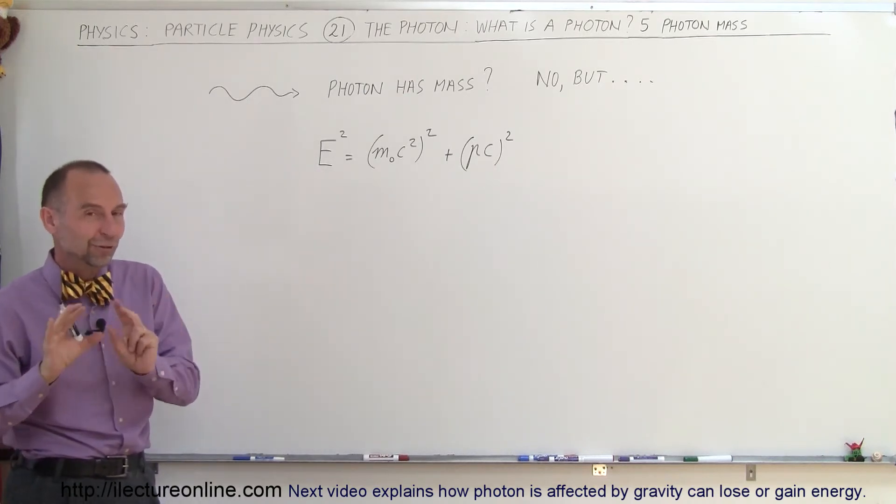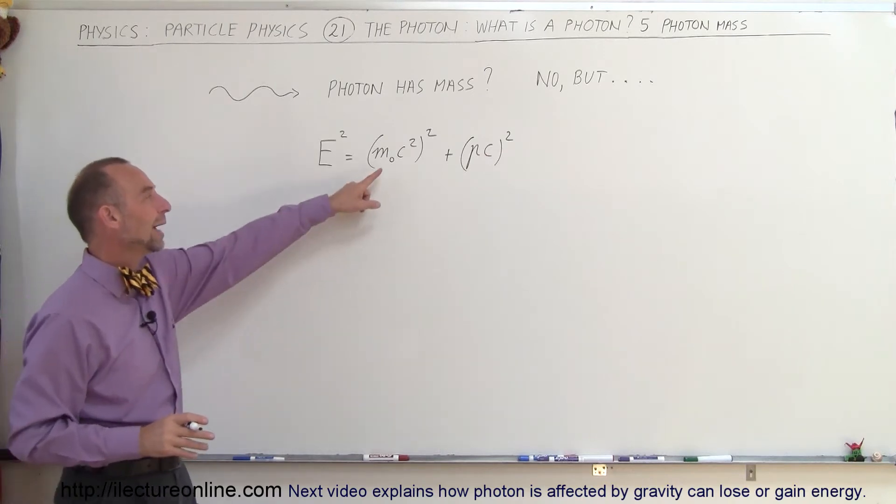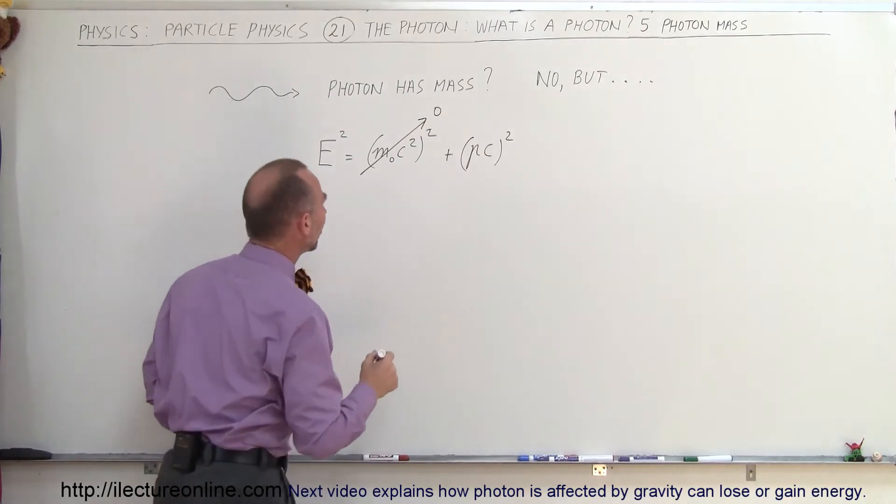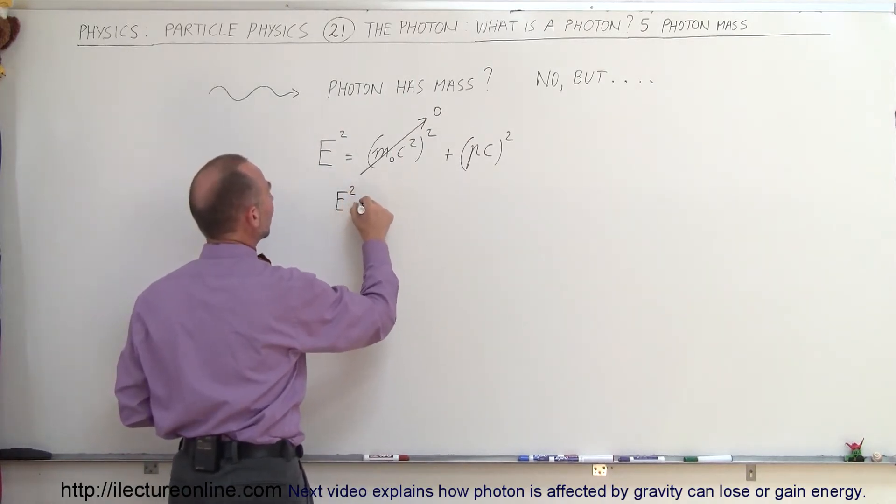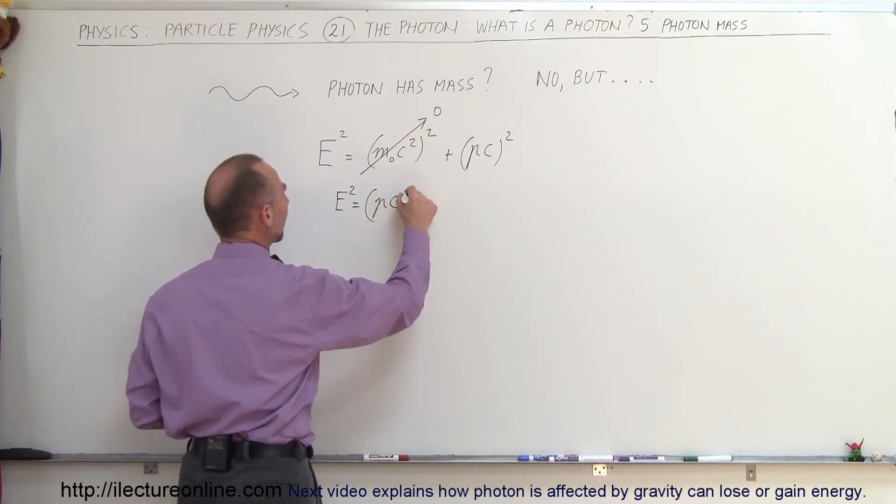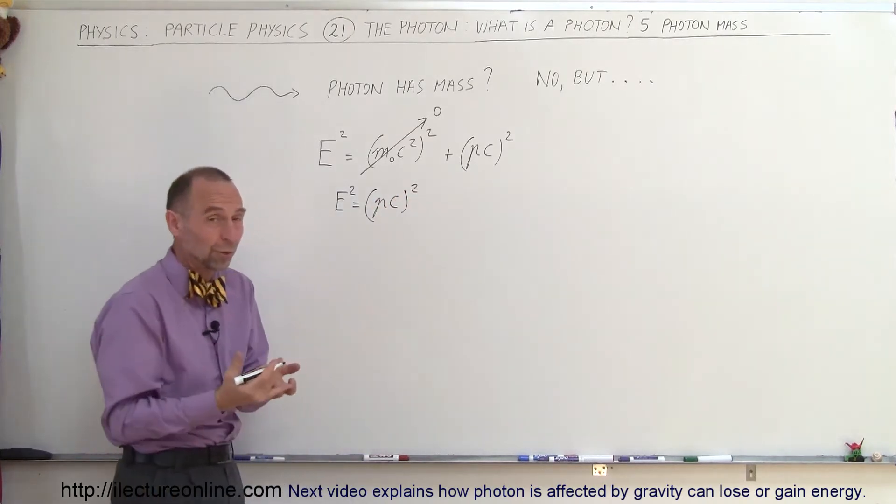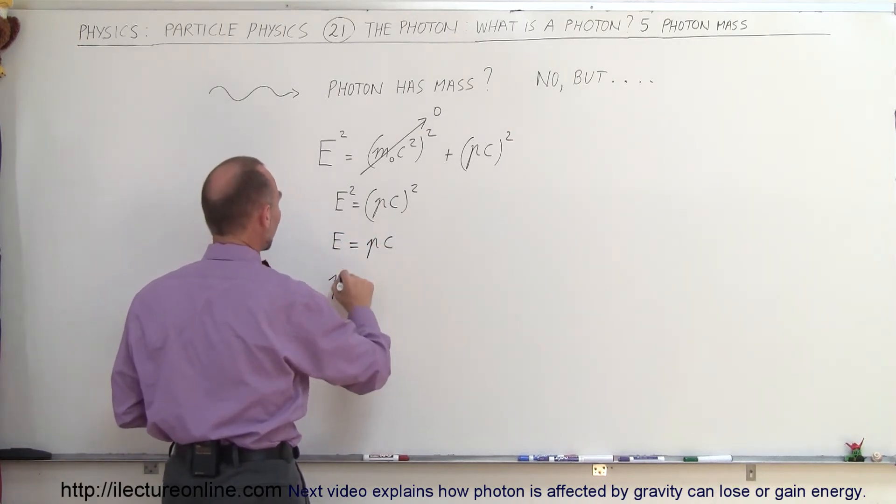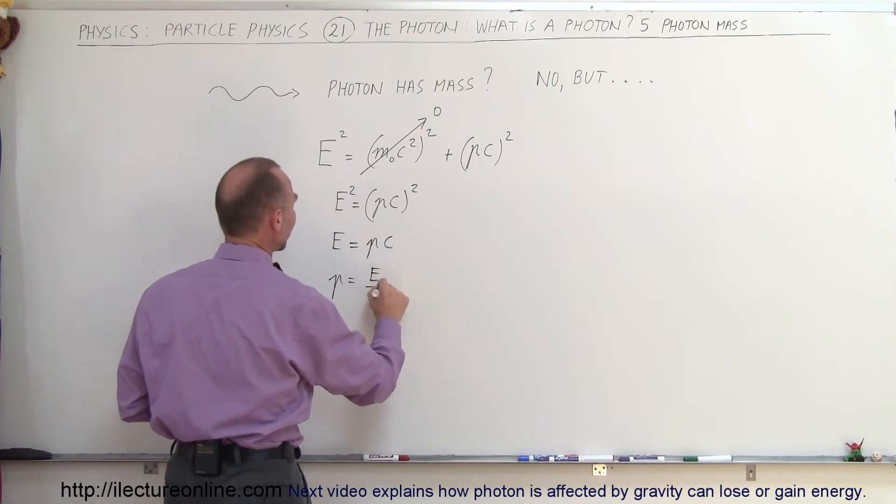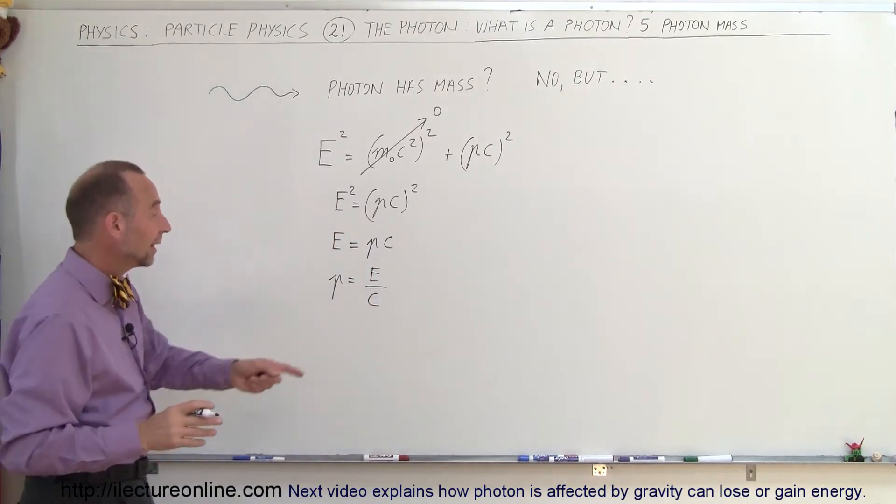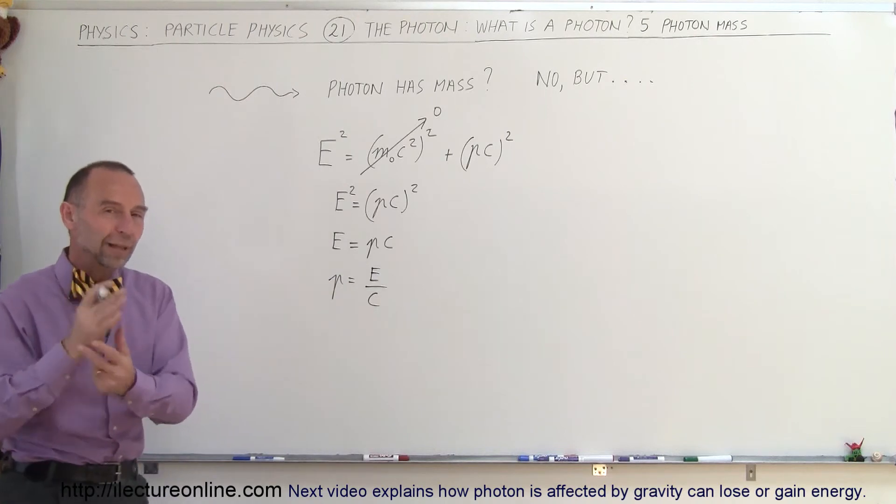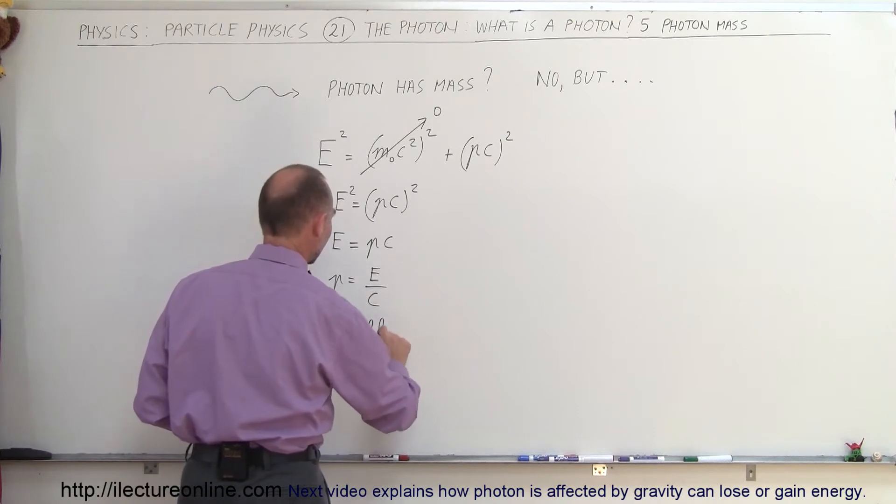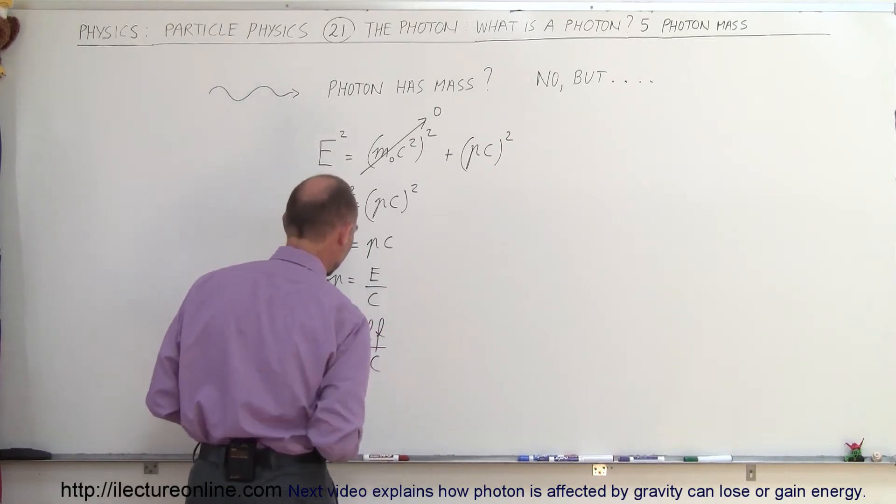So now for a photon, since we know that the photon doesn't have mass, we can go ahead and get rid of this term. So for a photon, there's no rest mass, so it's equal to zero, which means that the energy squared is equal to the momentum times the speed of light, quantity squared. Therefore, we can take the square root of both sides. So we can say that the energy is equal to the momentum times the speed of light, or the momentum is equal to the energy divided by the speed of light. And of course, remember that the energy of a photon is equal to the Planck's constant times the frequency. So we can say that the momentum P is equal to H times F divided by the speed of light.